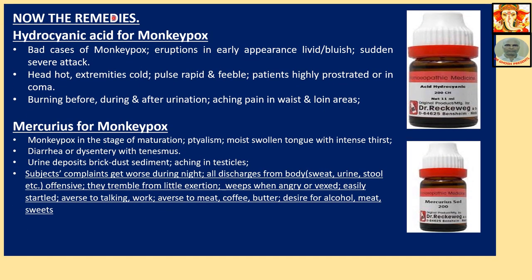Now the remedies. Hydrocyanic acid for monkeypox: indicated in bad cases of monkeypox with eruption appearing livid or bluish in early appearance. Sudden severe attack. Head hot, extremities extremely cold, pulse rapid and feeble, patient highly prostrated or in coma. Burning before, during, and after urination. Aching pain in waist and loin areas.